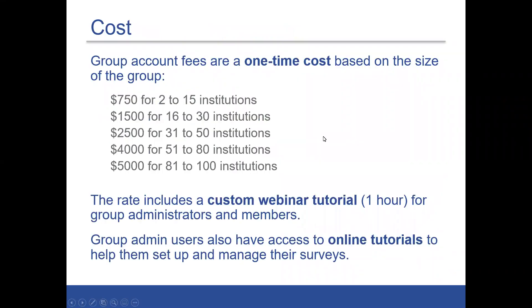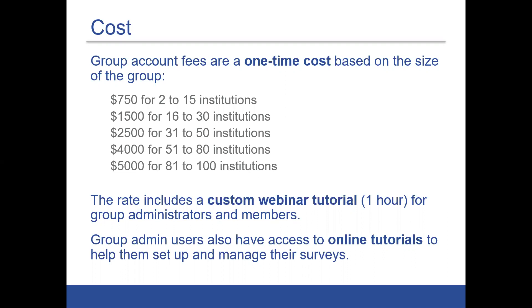Now for cost — this is a one-time cost to set up a group account because it takes a fair amount of support and work on our part. It is based on the number of institutions in the group. For any group that is set up, we run a custom webinar tutorial for all group administrators and members. We also give group admin users access to special online tutorials. This works out to less than $100 per institution. Once set up, there's no limit to the number of surveys, templates, or amount of data you can collect. Groups with more than 100 institutions can also be accommodated.